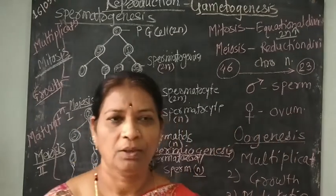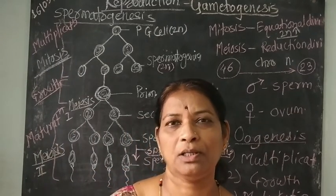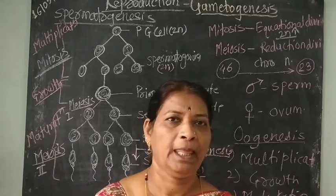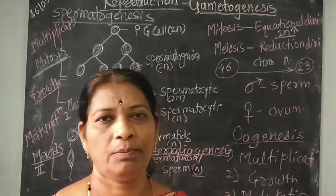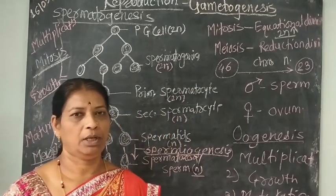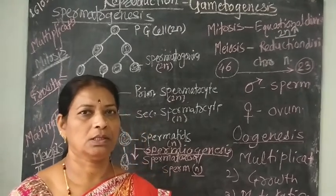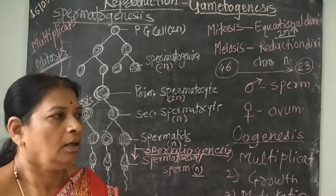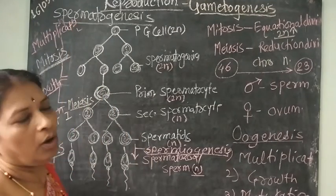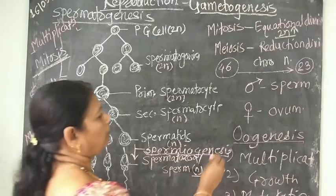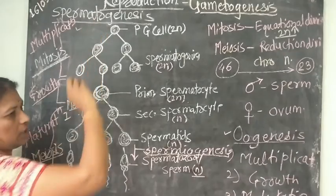Good morning students. Today we are going to continue with the next point in the topic reproduction, that is gametogenesis. Gametogenesis is a term in which the gametes are formed from the male gonad and female gonad. The two steps completed during this process are formation of the male gamete by the process known as spermatogenesis, and formation of the female gamete by a process known as oogenesis. First we are going to continue with spermatogenesis.